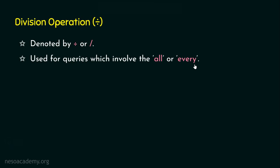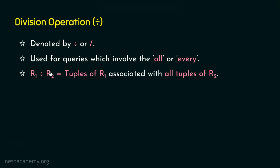When we see some examples, it will be clear for you. In this presentation, we are going to understand the basics only. We are going to perform division among two relations. Let's take R1 and R2 as two relations and perform R1 divided by R2. The output of R1 divided by R2 means the tuples of R1 that are associated with all tuples of R2.